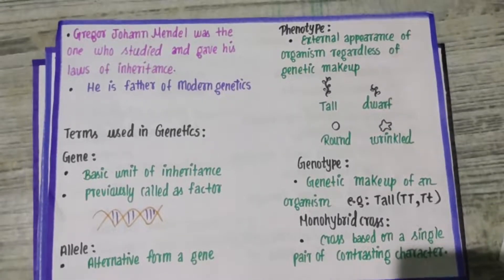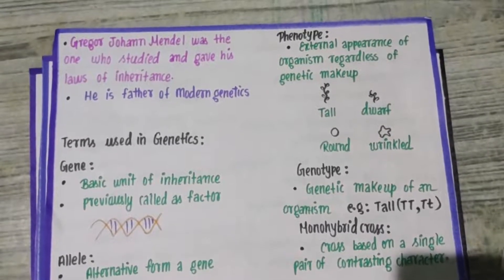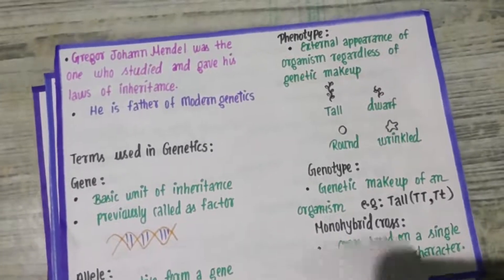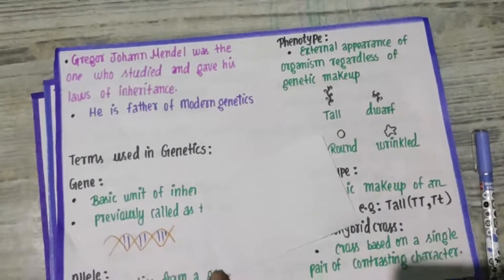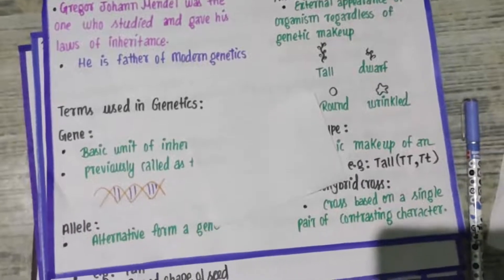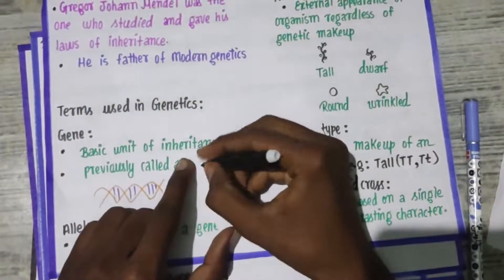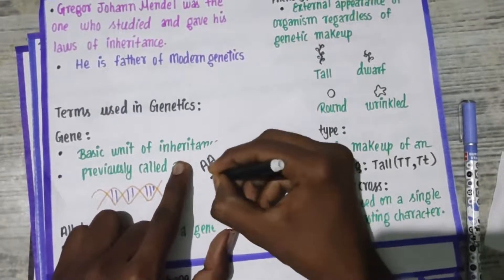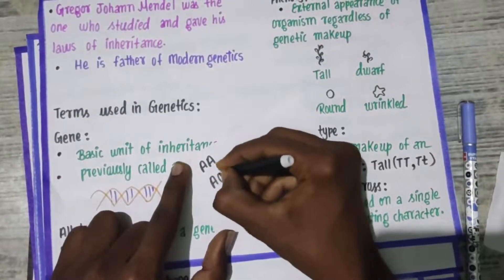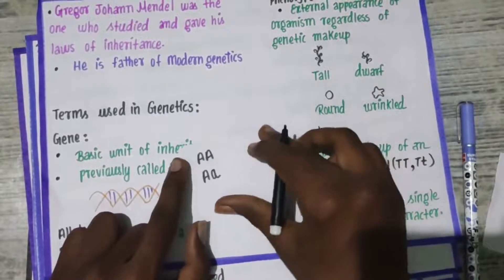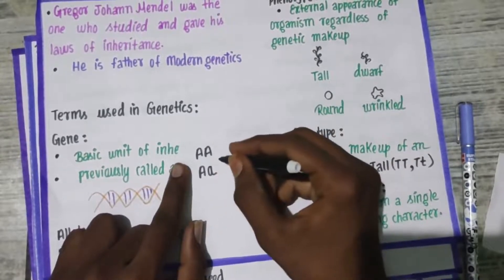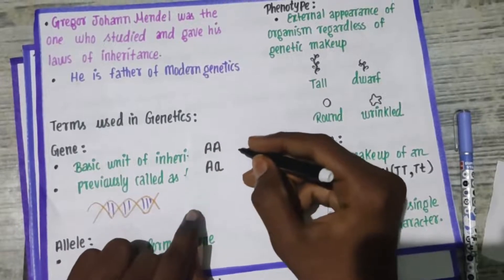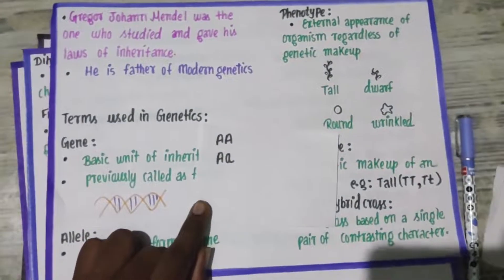There are two types: homozygous and heterozygous. If you have two alleles that are the same, that is homozygous. If the two alleles are different, that is heterozygous. Every character will have two alleles — one from the mother and one from the father.